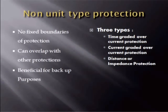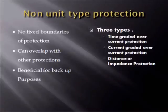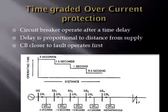Non-unit type protection schemes take into account these requirements. They have no fixed boundaries of protection and take into account a larger portion of the power system. They can even overlap with other protection systems and are compatible with backup systems. These include the time-graded protection system, current-graded protection system, and impedance-graded protection system. We will explain these one by one.